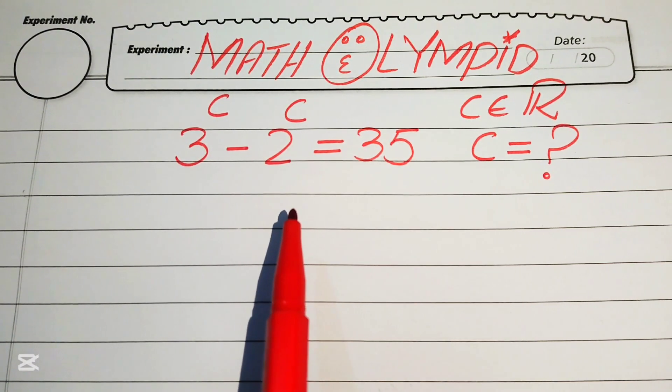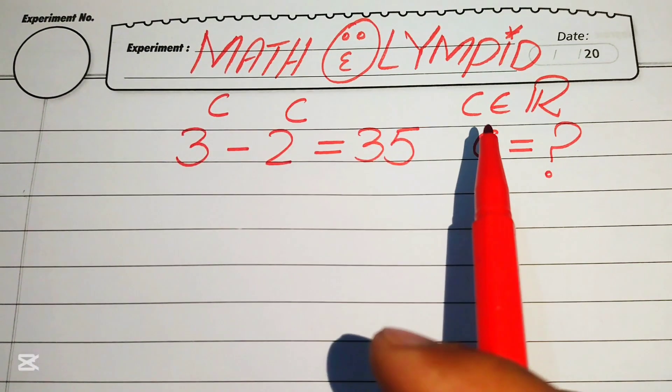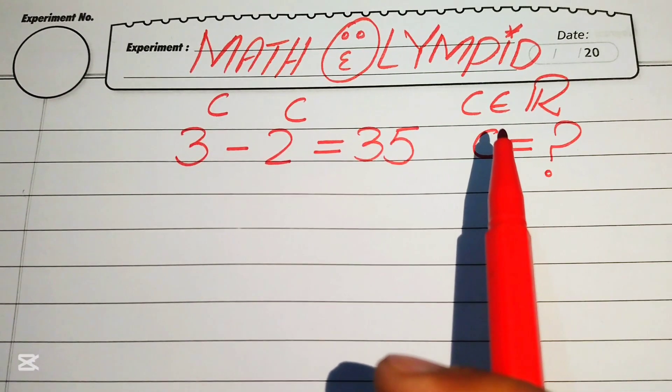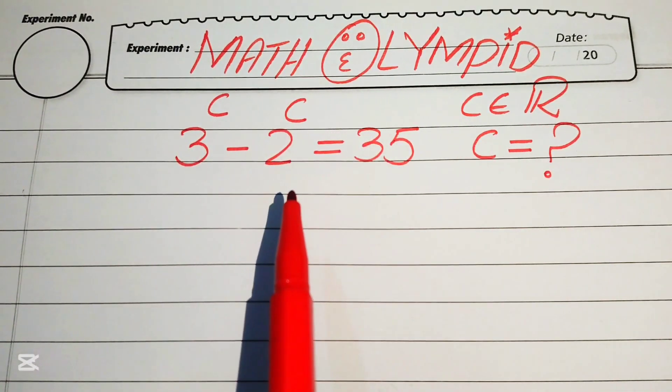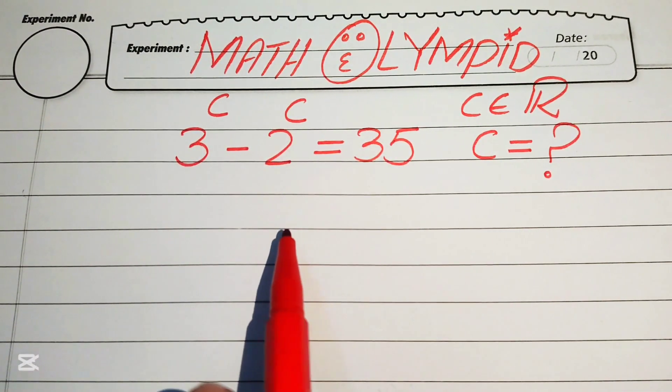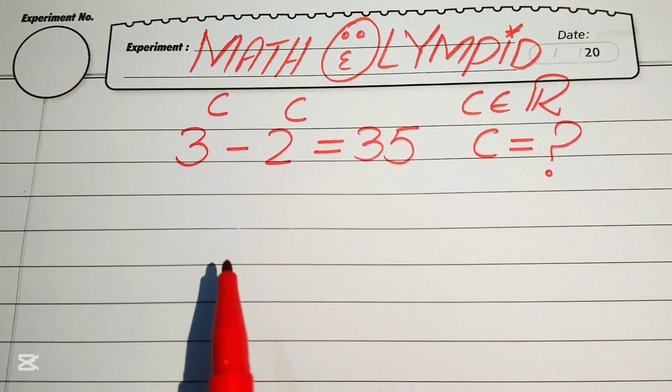Here, remember one thing: c belongs to ℝ, meaning that we find c for the values of real numbers.